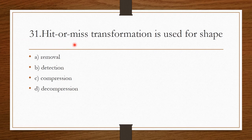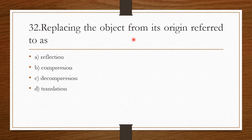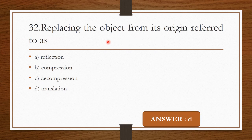Question 30: Hit or miss transformation is used for shape — removal, detection, compression, or decompression. Hit or miss transformation is used for shape detection. Option B is correct. Question 31: Replacing the object from its origin is referred to as — reflection, compression, decompression, or translation. The answer is translation. Option D is correct.